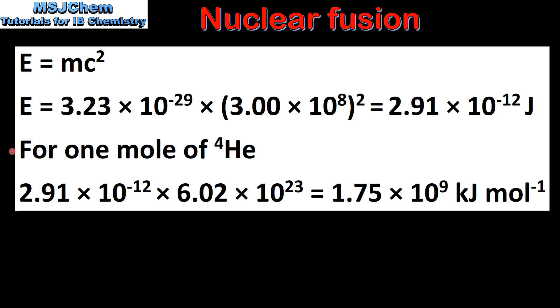This is the energy released in the fusion of one helium nucleus. To calculate the energy released for one mole of helium nuclei we multiply the value for one nucleus by the Avogadro constant to give us 1.75 times 10 to the 9 kilojoules per mole.